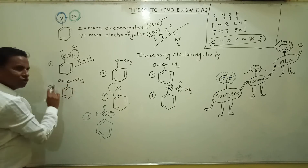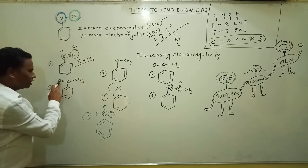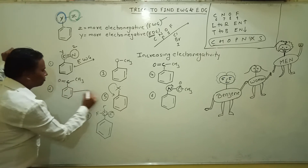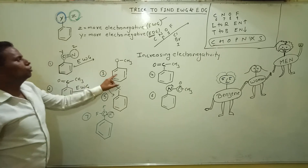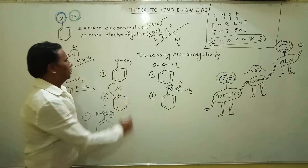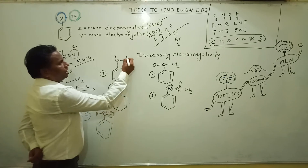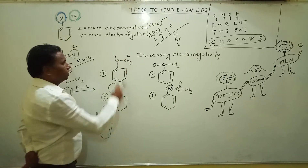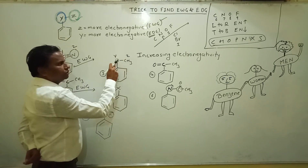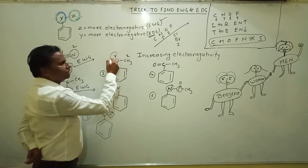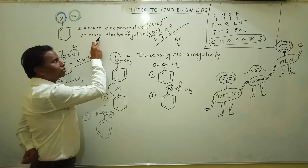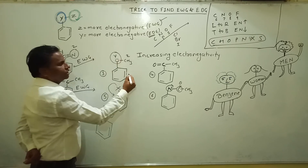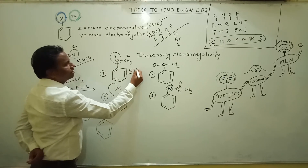In the second case, Y is carbon and Z is oxygen. Oxygen is more electronegative than carbon, so Z is more electronegative — therefore it is also an electron withdrawing group. In the third example, Y is oxygen and Z is carbon. Oxygen is more electronegative than carbon, meaning Y is more electronegative, therefore this group is an electron donating group.